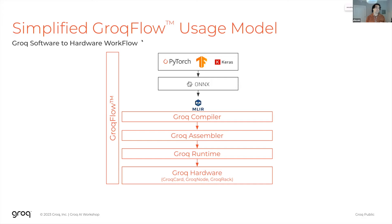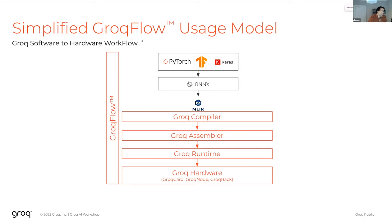A compiler's job is to take some input program and translate it into instructions that can run on the target machine. In Grok's case, this input program is an ONNX model and the output is Allen assembly — a textual representation of the instructions for controlling different functional units. On the left we have a contrived model written in PyTorch, being exported to the ONNX format, and we want to compile that down to instructions that run on the Grok chip.